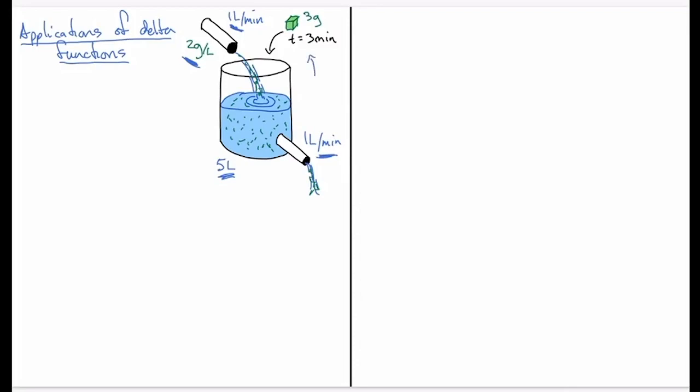The added piece here that we haven't discussed before is that at three minutes after the system starts going we're going to add in a sugar cube containing three grams of sugar, and so that is the piece that's going to introduce a delta function.